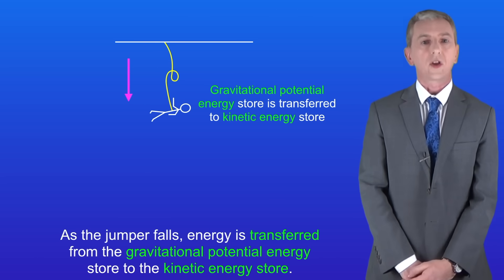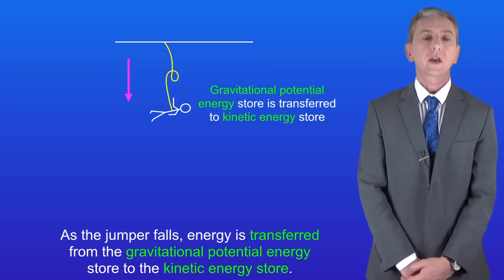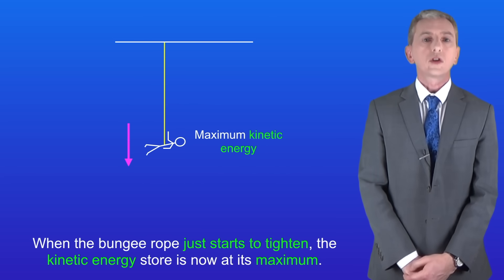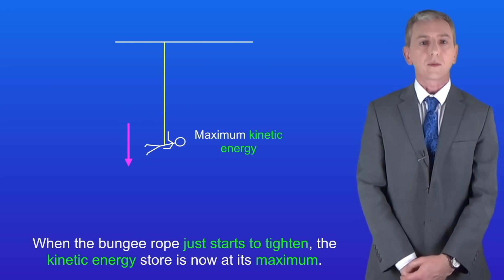As the jumper falls, energy is transferred from the gravitational potential energy store to the kinetic energy store. When the bungee rope just starts to tighten, the kinetic energy store is now at its maximum.